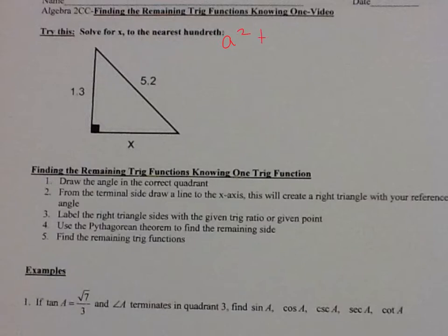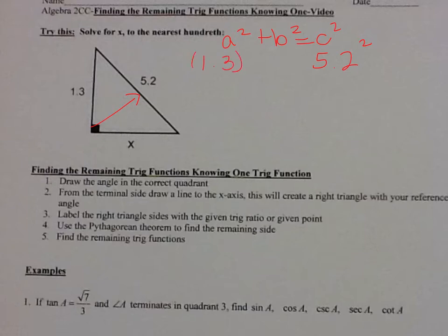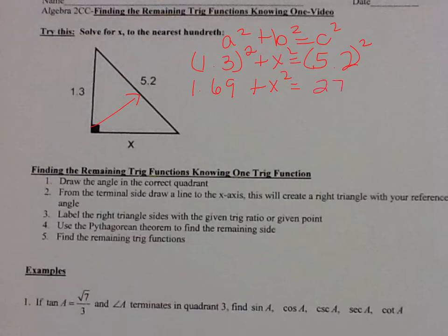So that would be a squared plus b squared is equal to c squared. Remember, c is your hypotenuse, and the hypotenuse is always opposite the right angle, so 5.2 is your c. So I have 1.3 squared plus x squared is equal to 5.2 squared. So 1.3 squared is 1.69 plus x squared equals 5.2 squared, which is 27.04.